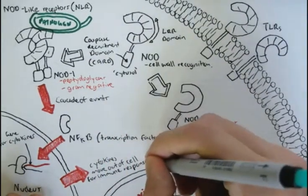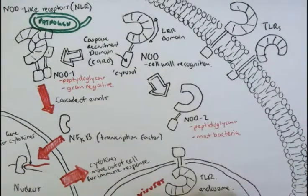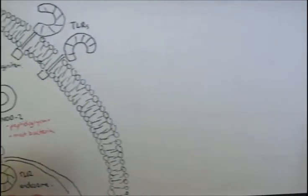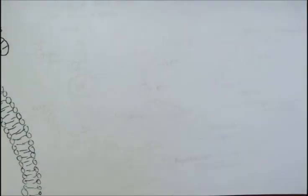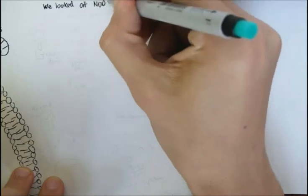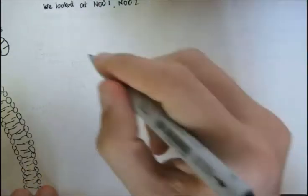That's how the basic process works. It works similarly to the toll-like receptors because it acts like a signaling molecule, making cytokines. Now let's look at other types of NLRs. We looked at NOD1 and NOD2, the main ones.